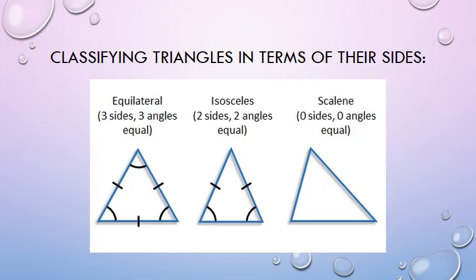Then in the middle you get the isosceles triangle, which has two sides that are equal — we call them the two legs. At the bottom of the two legs, at the two feet, the angles are also equal. Then you also get a scalene triangle, where zero sides are equal and zero angles are equal. Mainly we are going to focus on the equilateral triangle and the isosceles triangle.